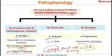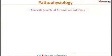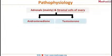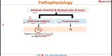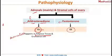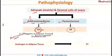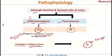In postmenopausal females, the major source of androgens is the adrenals, and androgens are also secreted from the stromal cells of the ovary — mainly androstenedione and testosterone. The major source of androstenedione is the adrenals. In the adipose tissue, under the action of the enzyme aromatase, androstenedione is converted to estrone and testosterone is converted to estradiol. Therefore, in menopausal females, estrone is the major estrogen in the body.